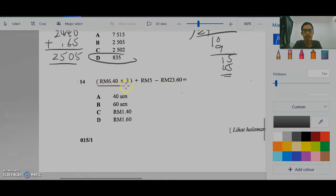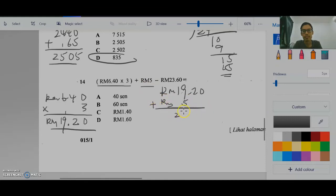Question 14. Sama juga jawab yang ada dalam kurungan dulu. RM6.40 darab 3. 3 kali kosong. 3 kali 4. 3, 6, 1, 8. Tambah 1, 19. Titik jangan lupa. RM19.20. So, sekarang awak tambah RM5. RM24.20 tolak RM23.60. Yang ini kosong. Tak cukup. Tambah 10. Tolak 1. 12 tolak 6, 6. Ini kosong. RM60.